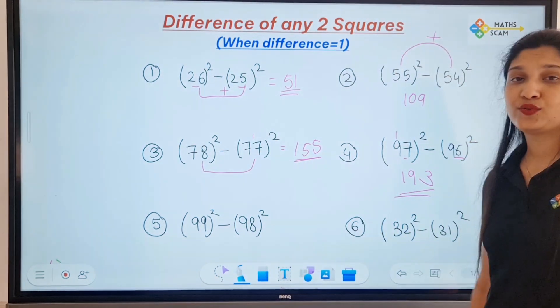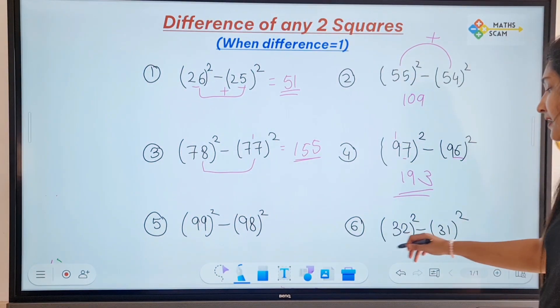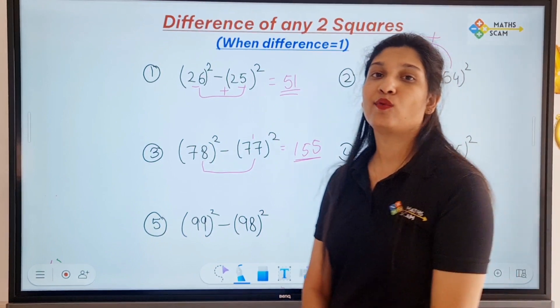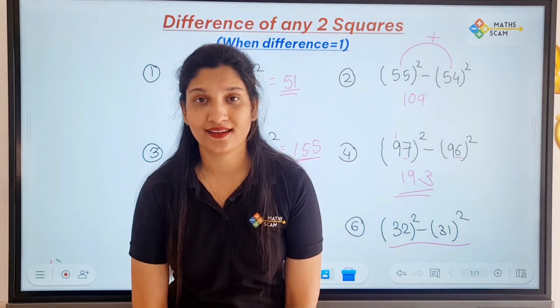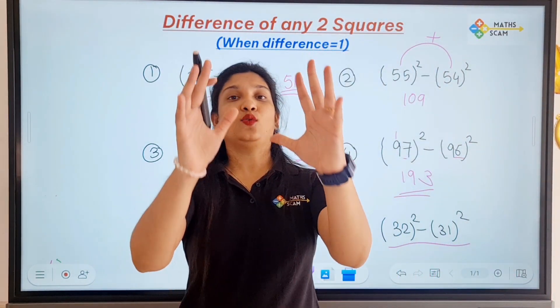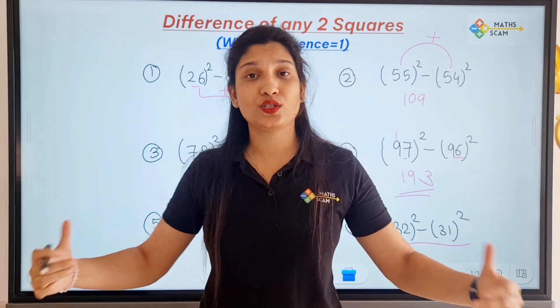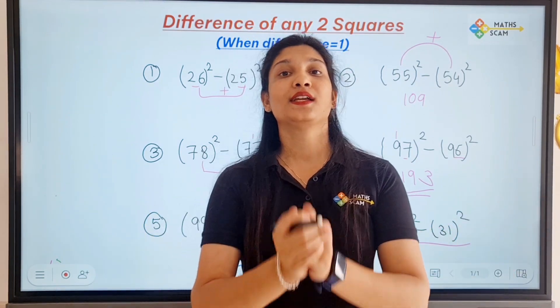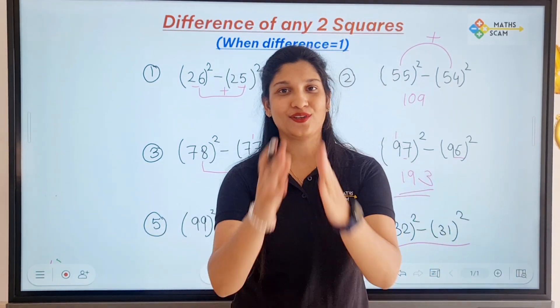And these are your homework questions: 99² minus 98² and 92² minus 91². So solve those questions, do the practice of the tricks, and see you in the next video. Take care, bye bye.